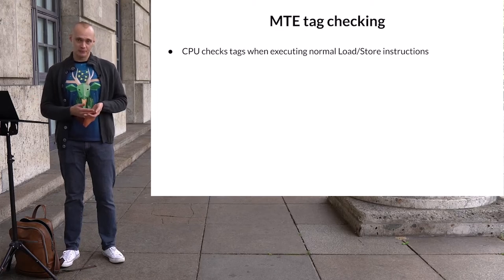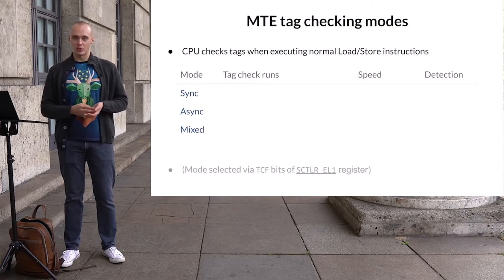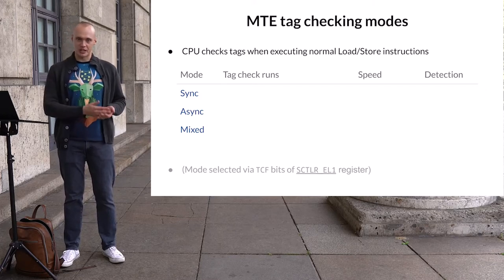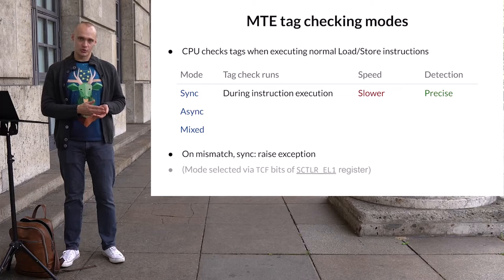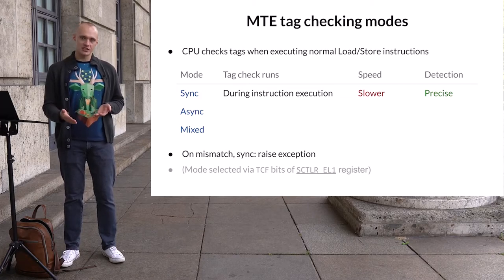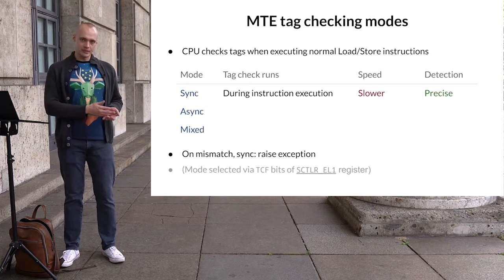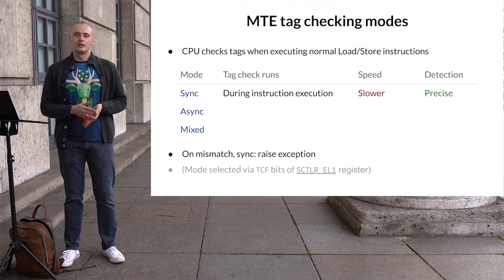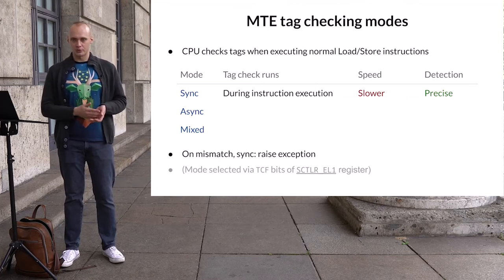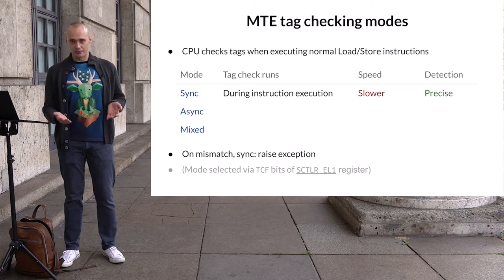Actually, it's a bit more complicated. MTE has three different modes that specify how the CPU checks tags and how it handles tag mismatches. The first one is called the synchronous mode, or sync for short. In the sync mode, the CPU checks tags while executing the instruction — until the tag check is complete, the next instruction will not be executed. This mode allows precisely identifying which instruction causes an exception. However, since the instruction itself might execute faster than the tag check, this mode might slow down execution.